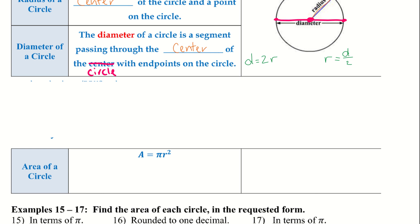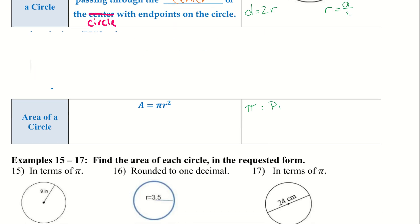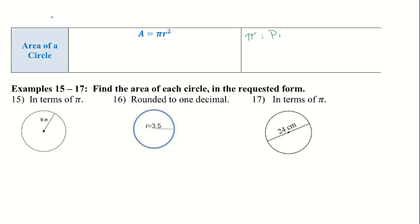The area of a circle: A equals pi r squared. For the most part, we're going to leave answers in terms of pi, though some problems will ask for a decimal. Pi can be used like a variable — it has a specific value, that long decimal — and r stands for radius. If we're given the diameter, we have to find the radius first and not use the diameter.